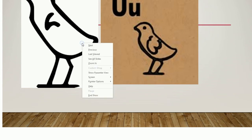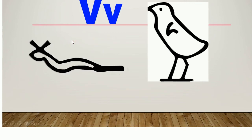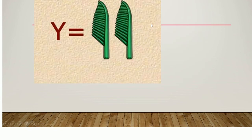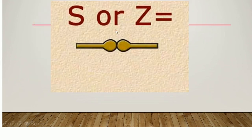For U we have a quail chick. For V we have the same symbol as F — a viper snake — and we can also use this symbol for V. For Y, again, we have two reeds next to each other. And here we have a bolt or lock symbol for the Z sound. So in just a few minutes you've already gone through the whole alphabet, and I hope I made that as easy as possible for you.